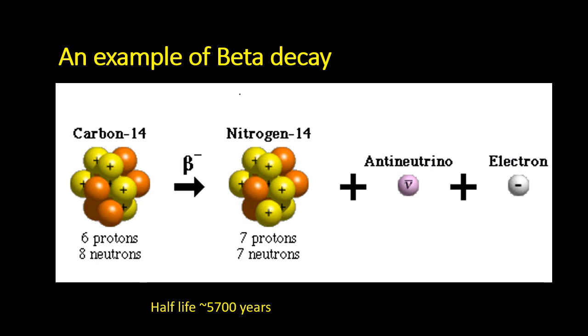One of the most famous examples of beta decay is when a carbon-14 nucleus changes into nitrogen-14. The half-life of this decay is 5,700 years, and is often used for radiocarbon dating. By the amount of carbon-14 left in an organic object, you can tell how old it is.